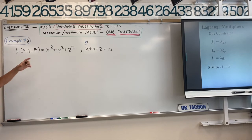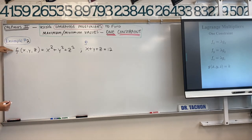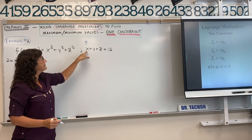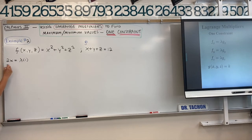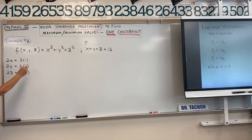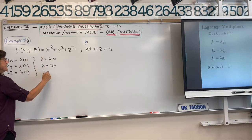Taking the first partial of the surface with respect to x gives 2x; set that equal to lambda times the partial of the constraint with respect to x, which is 1. Similarly, the partial with respect to y gives 2y equals lambda times 1, and the partial with respect to z gives 2z equals lambda times 1. So we have lambda equals 2x, lambda equals 2y, and lambda equals 2z.